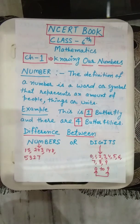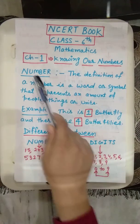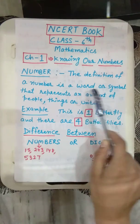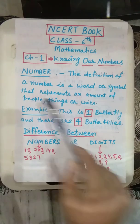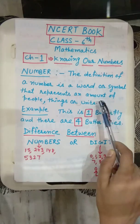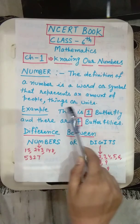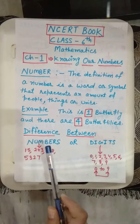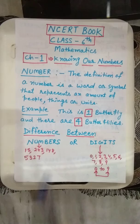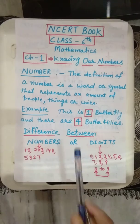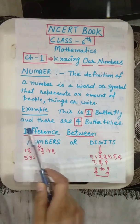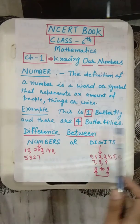Firstly, I will tell you what is a number. The definition of a number is a word or symbol that represents an amount of people, things, or units. In other words, we can say that a number is a mathematical object used to count, measure, and label. An example of a number is 5. For instance, 1 butterfly — 1 is a number — and there are 4 butterflies, so 4 is a number.